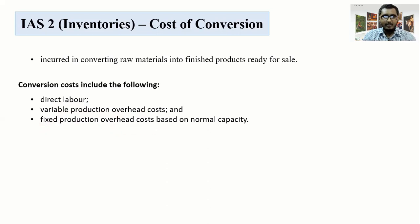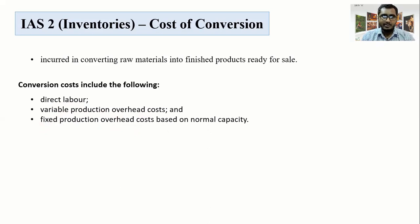Direct labor costs are included. Then variable production overhead and fixed production overhead — for example, factory rent, electricity bills, and depreciation are examples of fixed overhead production costs.